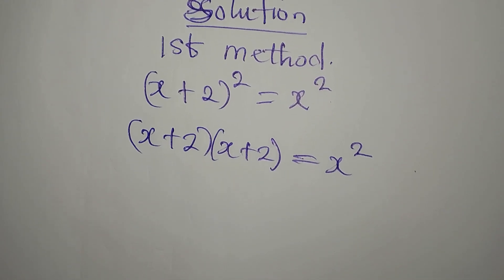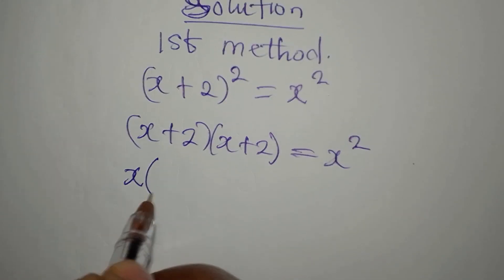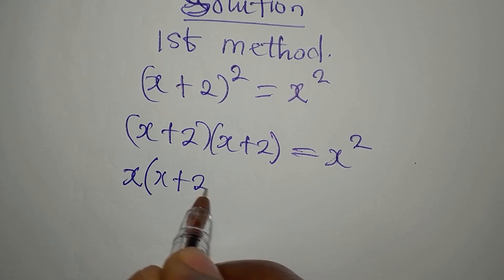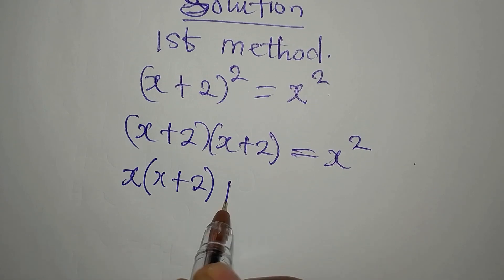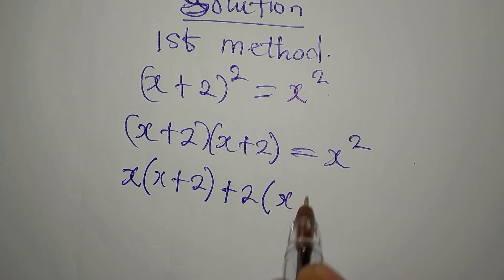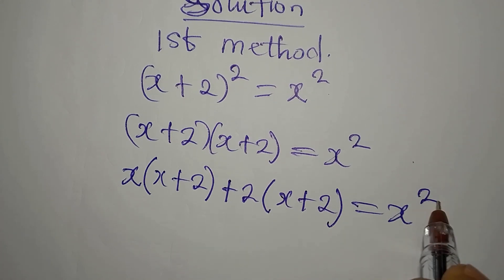Here is what you do if you want to expand this. You have x open bracket everything on the second bracket x plus 2. Then, we have plus 2 in the first bracket open bracket everything in the second bracket. This is equal to x squared.